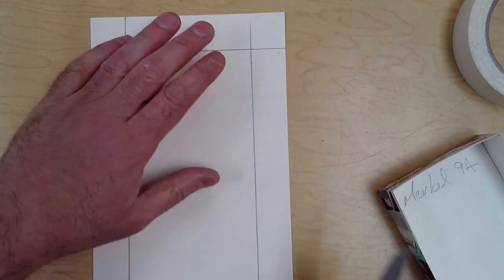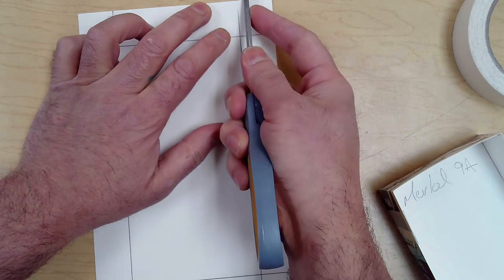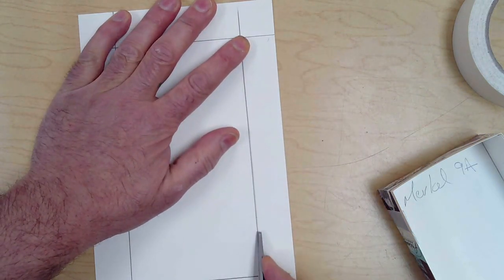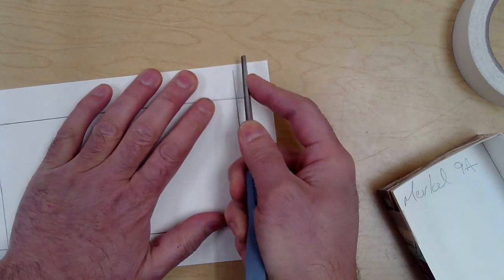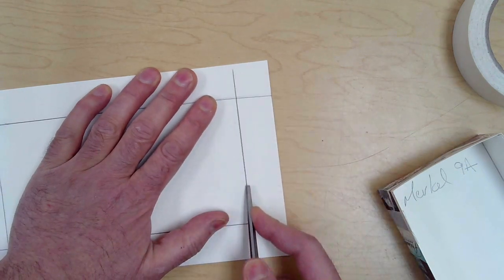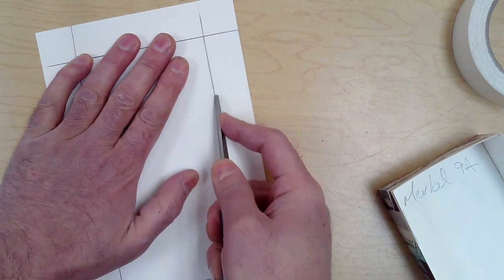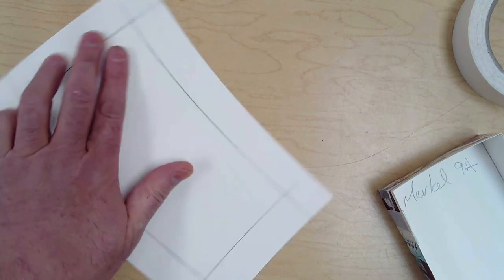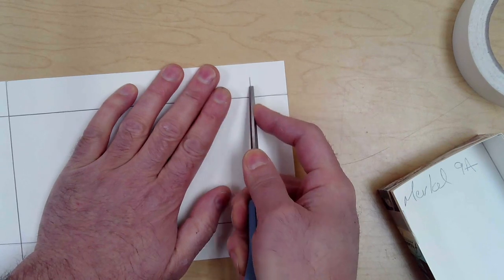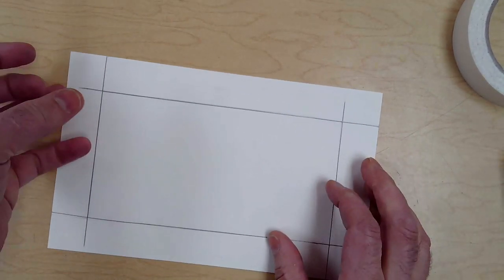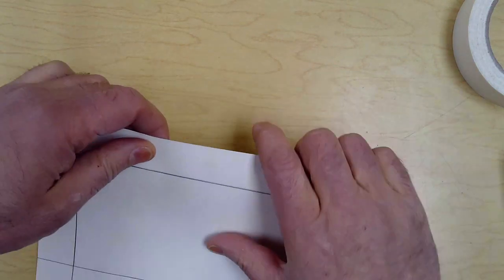Score along the lines. This time, instead of folding up, fold away from you.